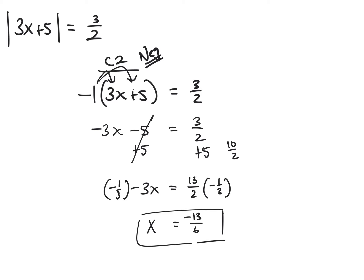The final answer is negative 13 over 6. That's your review on absolute value. Absolute value has two cases. If there are operations outside the bars, treat it as a variable and do a two-step inverse operation problem. Any questions?